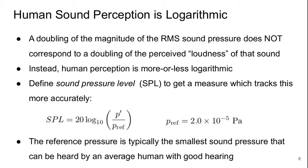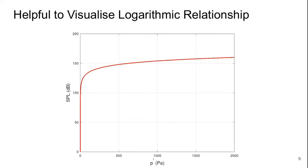Sound pressure level is defined as 20 times the log to the base 10 of the RMS pressure fluctuation over a reference pressure, where the reference pressure is 2×10⁻⁵ Pascals. This reference pressure is typically the smallest sound pressure that can be heard by an average human with good hearing. It's helpful to visualize this logarithmic relationship: at very small values of P' we get a very rapid rise in sound pressure level, which then rapidly levels off — that's the nature of a logarithmic function.